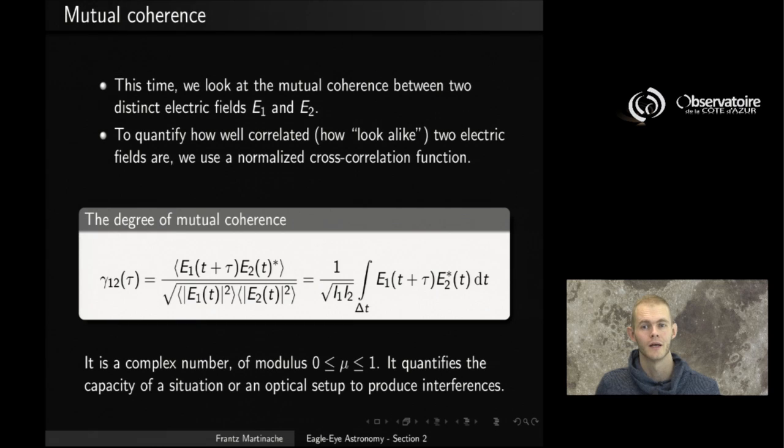Where we were looking at one signal and a copy of that signal delayed in time and see how the two were correlating well with each other. This time, we're going to look at the mutual coherence between two distinct electric fields, which we are going to label E1 and E2.